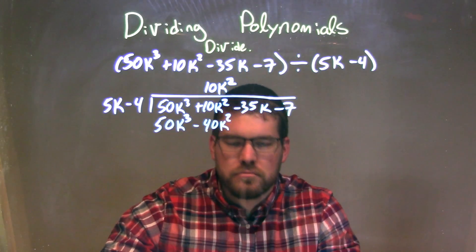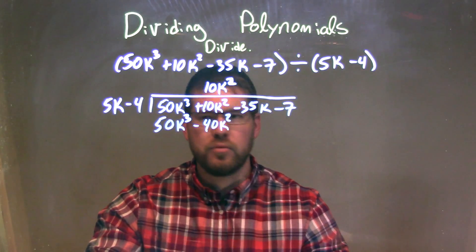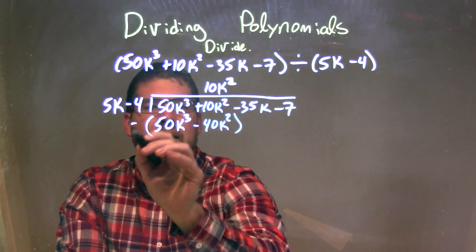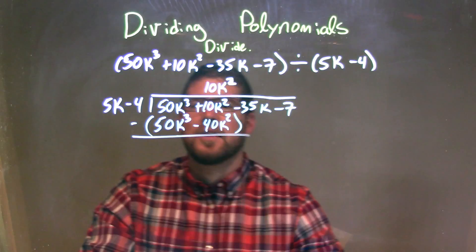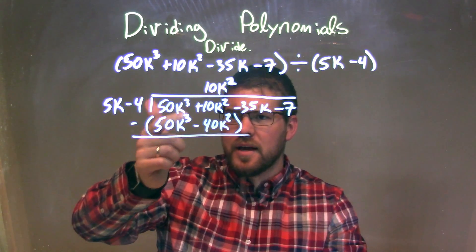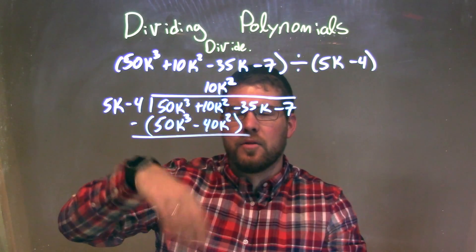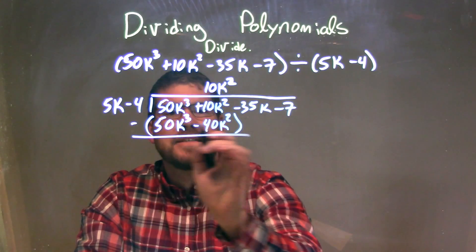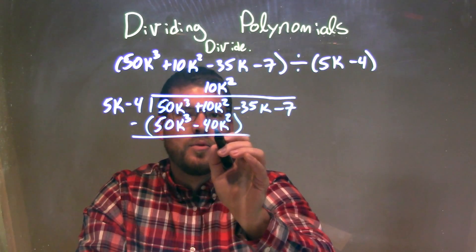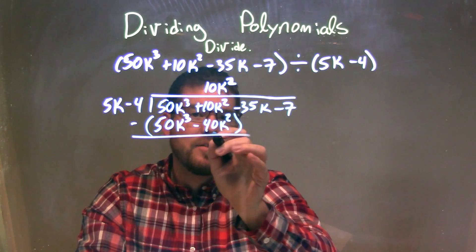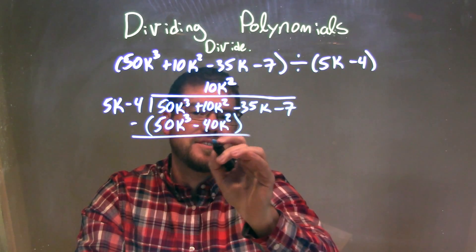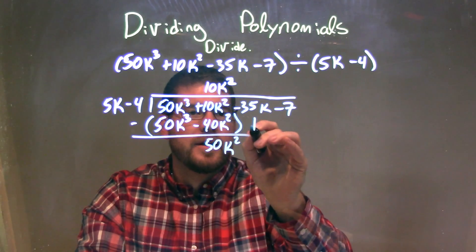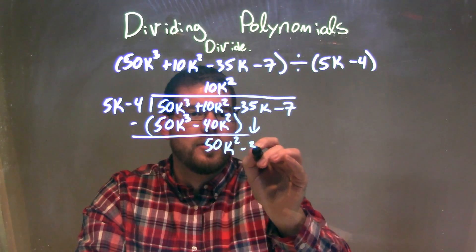Don't let the larger numbers fool you — it's the same process as every other time. We subtract the top from the bottom. Minus 50k³ minus 50k³ is just 0. And then we have 10k² minus a negative 40k², which is like adding a positive 40k², giving us 50k². And let's bring down the minus 35k.